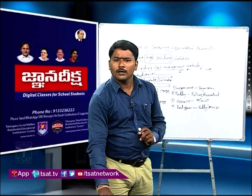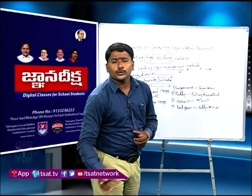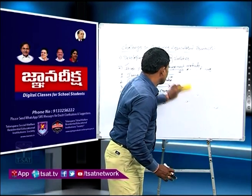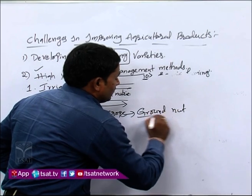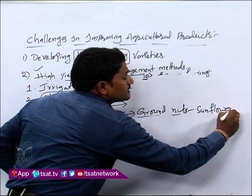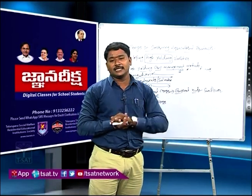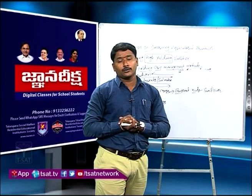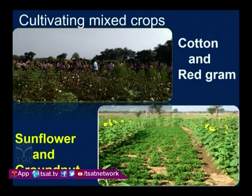You can see crop rotation images showing paddy and pulses, red gram and maize combinations. Moving on to cultivation of mixed crops — two crops are cultivated in the same field simultaneously. Examples include groundnuts with sunflower, groundnuts with red gram, groundnuts with cabbage, red gram with haldi, and cotton with red gram. Growing two crops simultaneously allows us to get produce from both crops at the same time.